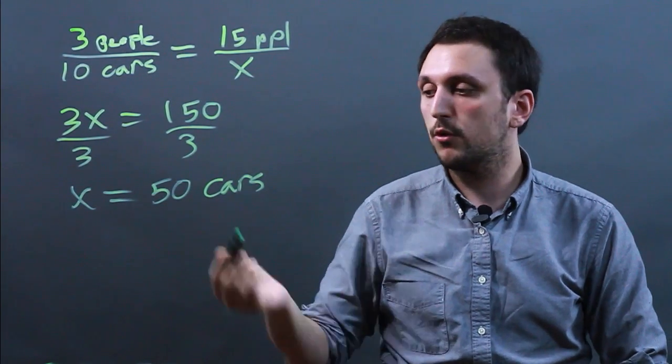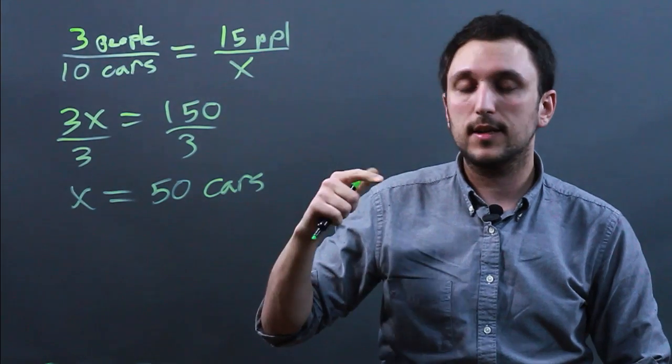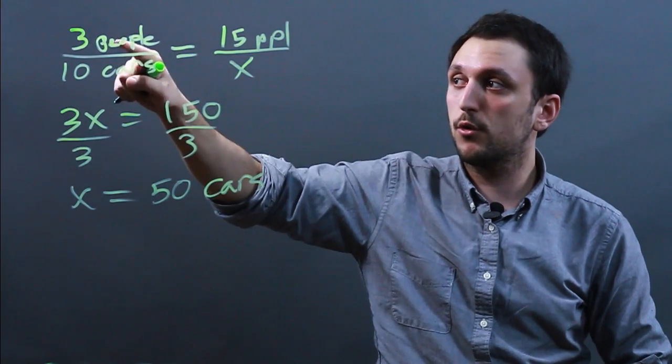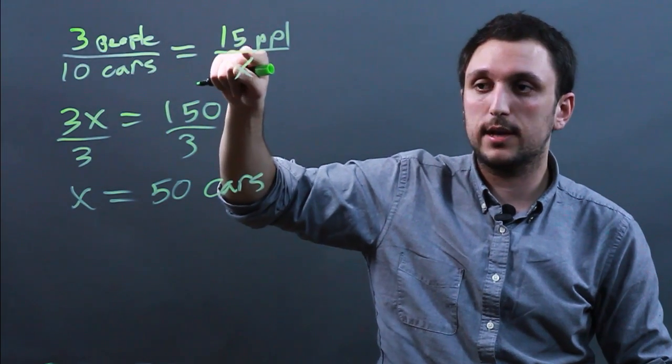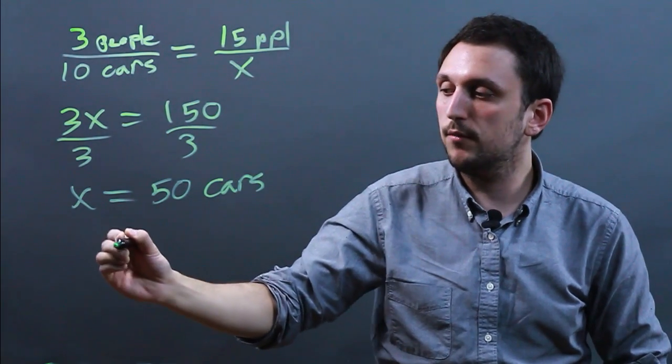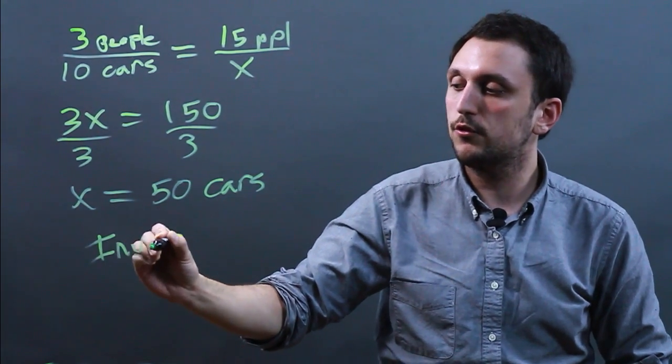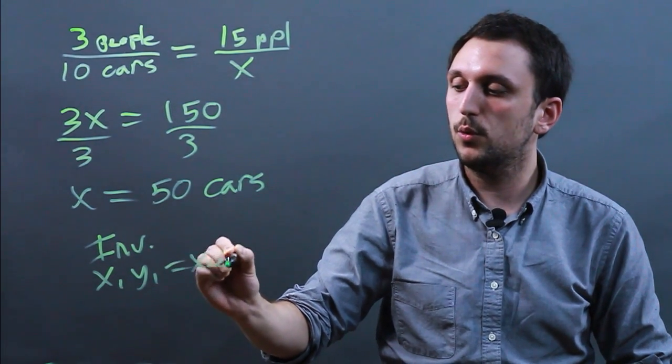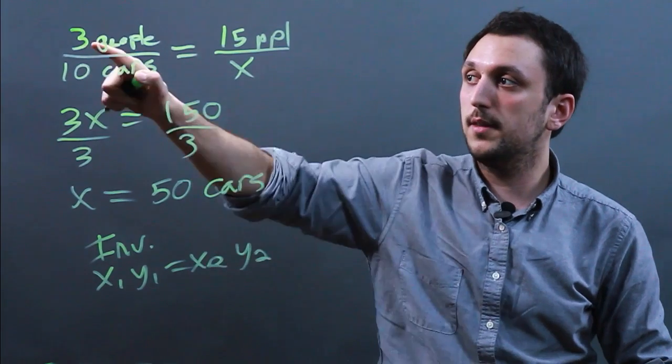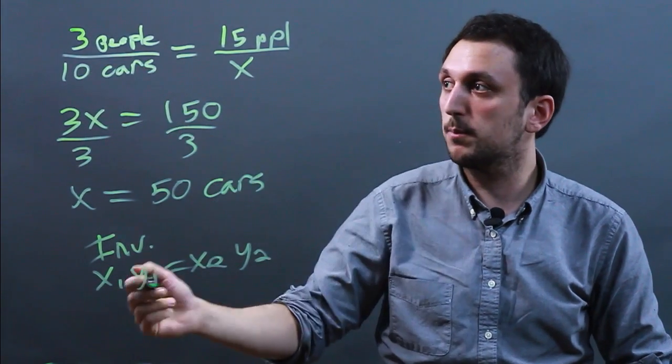Now, with inverse proportion, it's slightly different. I like to keep mine different, where direct proportion I do people to cars, like x1 over y1 equals x2 over y2. With inverse proportion, we should do x1, y1 equals x2, y2. So if we said that 3 and 10 were inversely proportional,